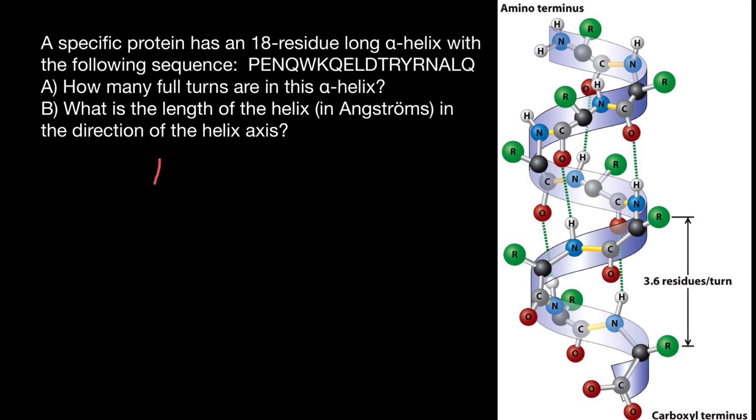So we have to divide 18 amino acids by the number of amino acids per one turn. And this is 3.6. So 18 divided by 3.6, and we are going to get five full turns. This is the answer to the first question.